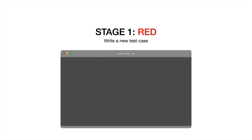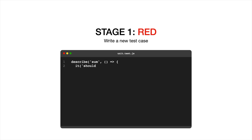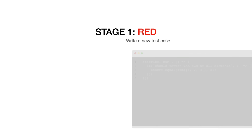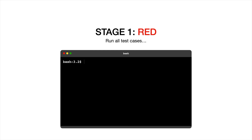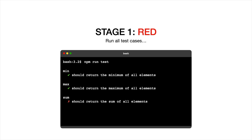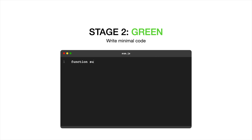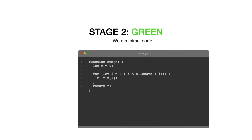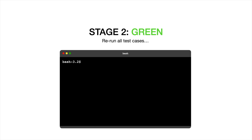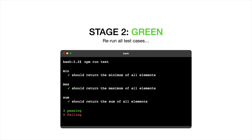First, we write a new test that matches the feature specifications based on use cases and user stories. Then we run the test cases and witness that the new test fails because the feature hasn't been implemented yet. Second, we write the simplest code possible to make the new test pass — it doesn't need to be elegant or easy to understand, it just needs to work. Then we run all the test cases, making sure that they all successfully pass.